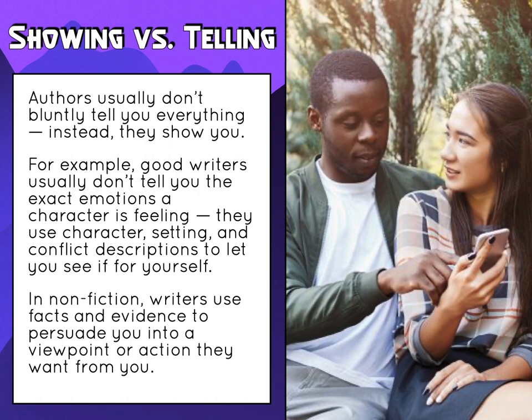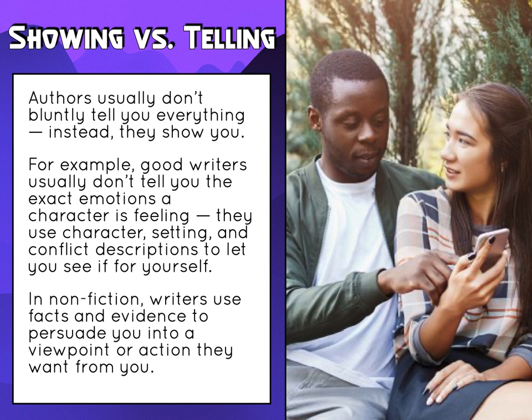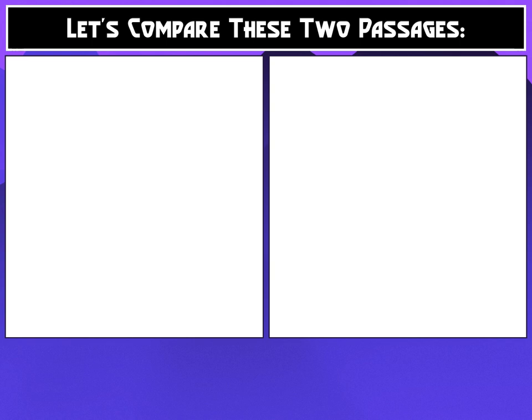If it's a history text, they might tell you what they're going to prove before showing the evidence, or they might not — depending on how they want to persuade you. If a writer wants to persuade you into an action, sometimes they prefer subtlety, having you infer the action, because people don't like being told exactly what to do. Let's compare two passages considering showing versus telling. They both deal with the same emotion, but one shows and one tells.